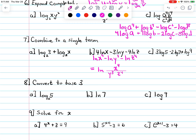Next, we want to do a change of base — changing each one to log base three. Remember, if you have log base a of u, you can write it as log base b of u divided by log base b of a. To change to log base three: write log base three of five, then divide by log base three of two. That's the change of base formula applied.